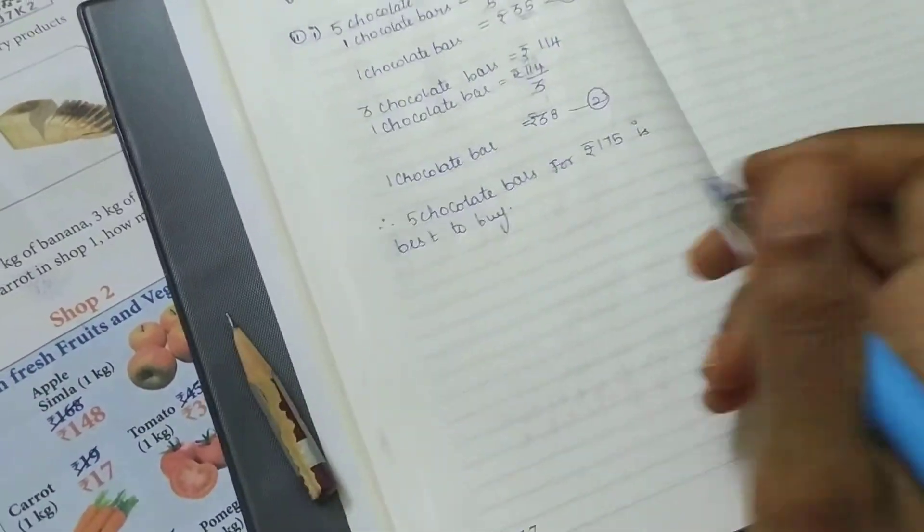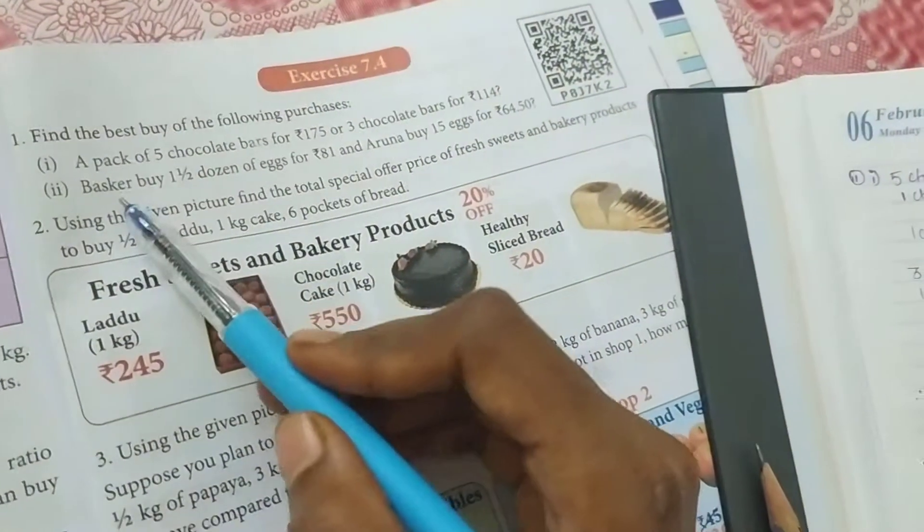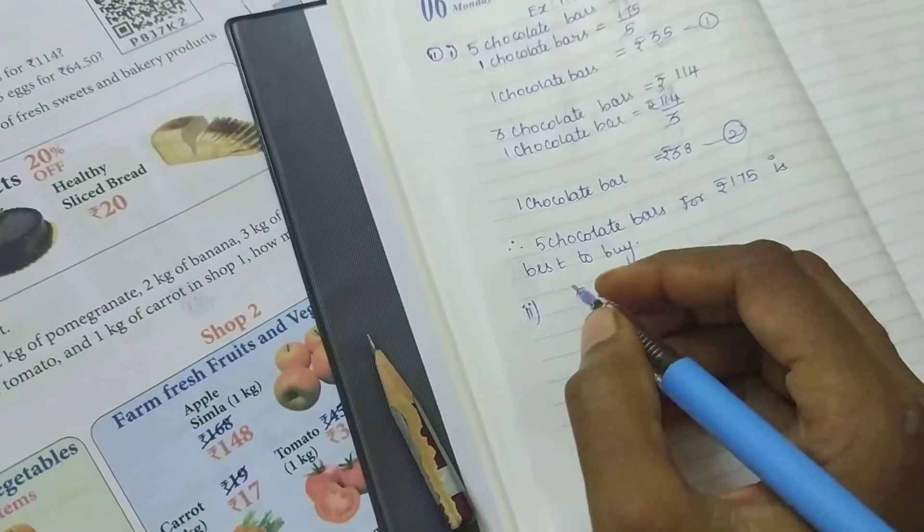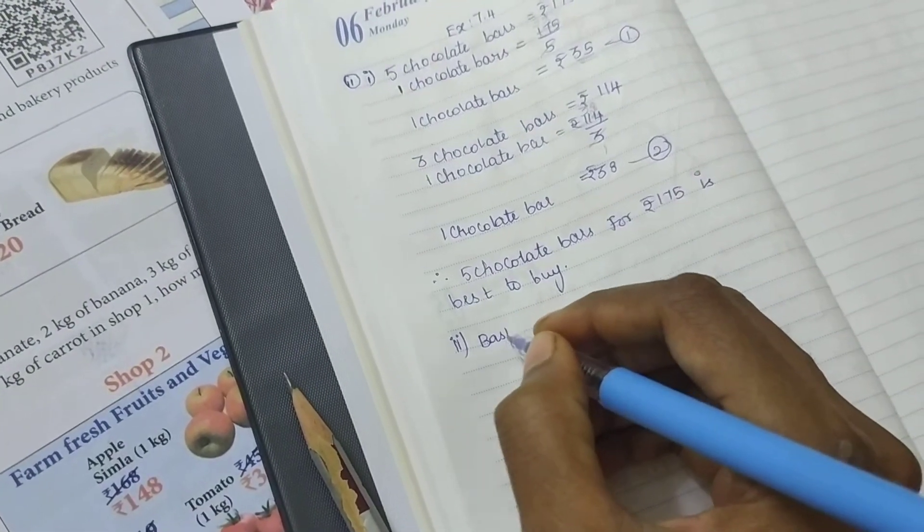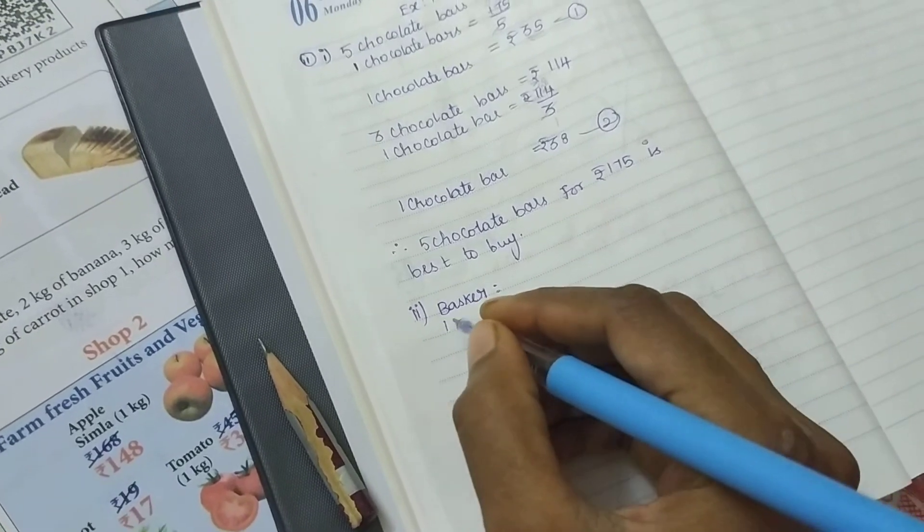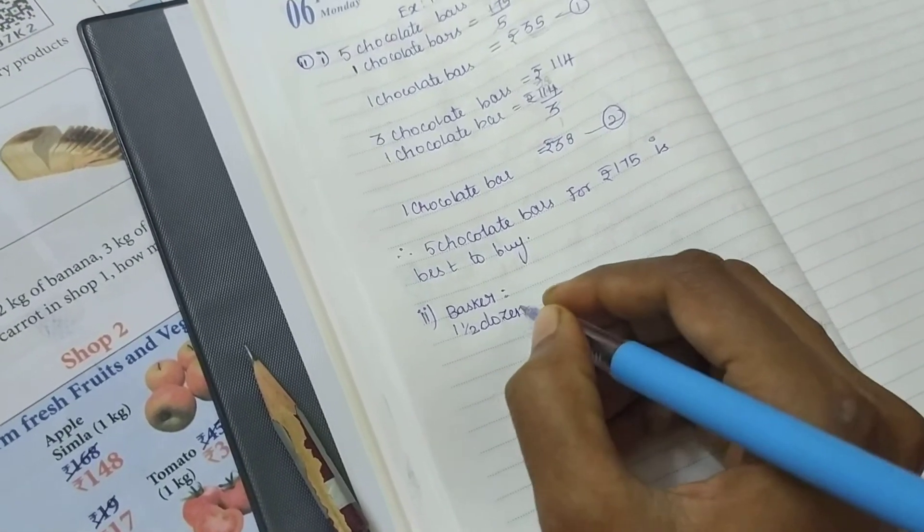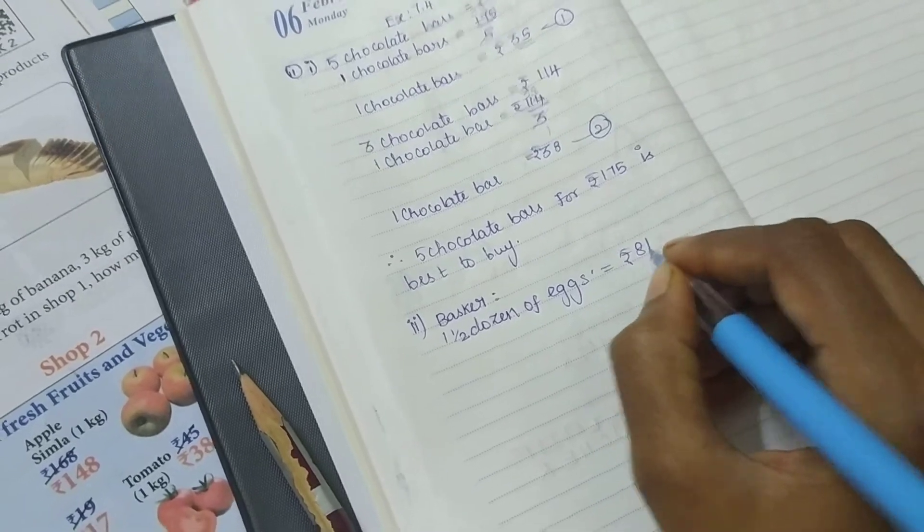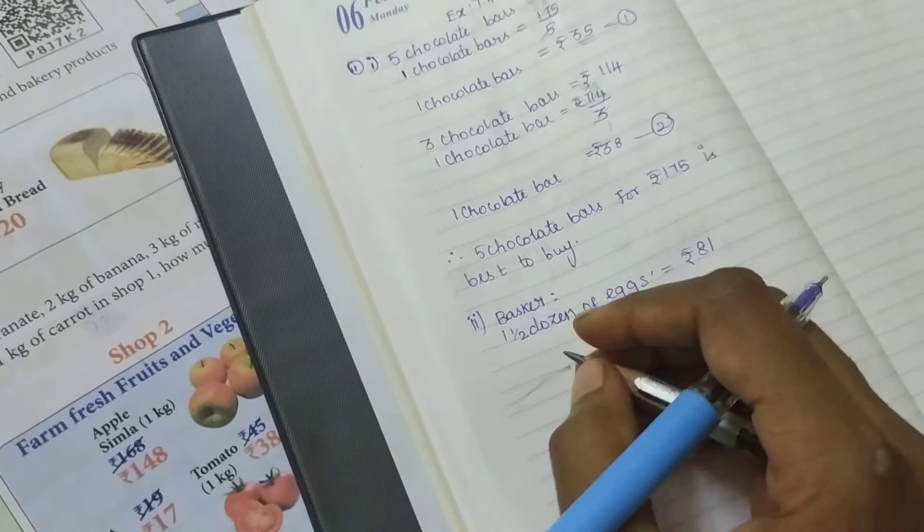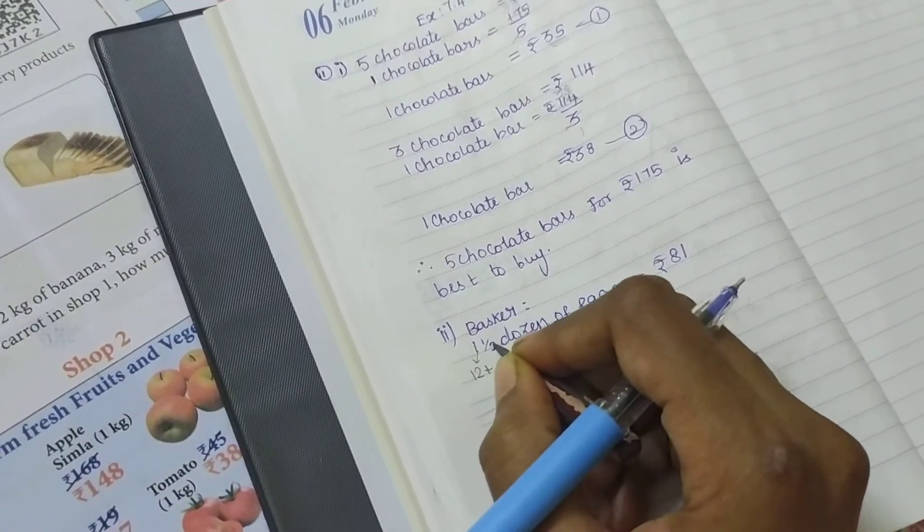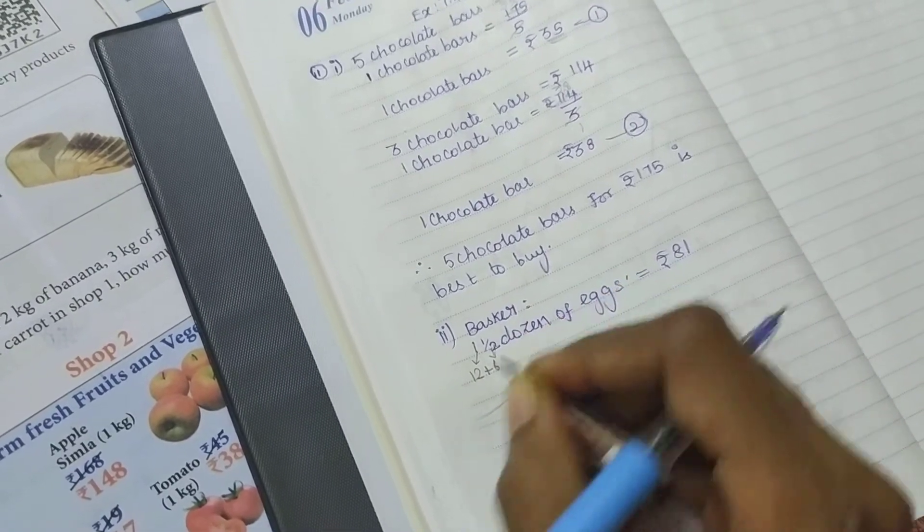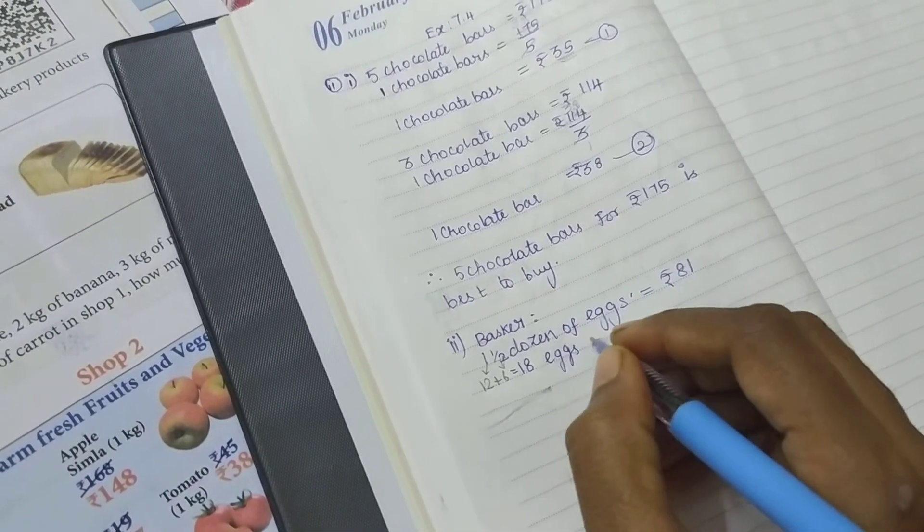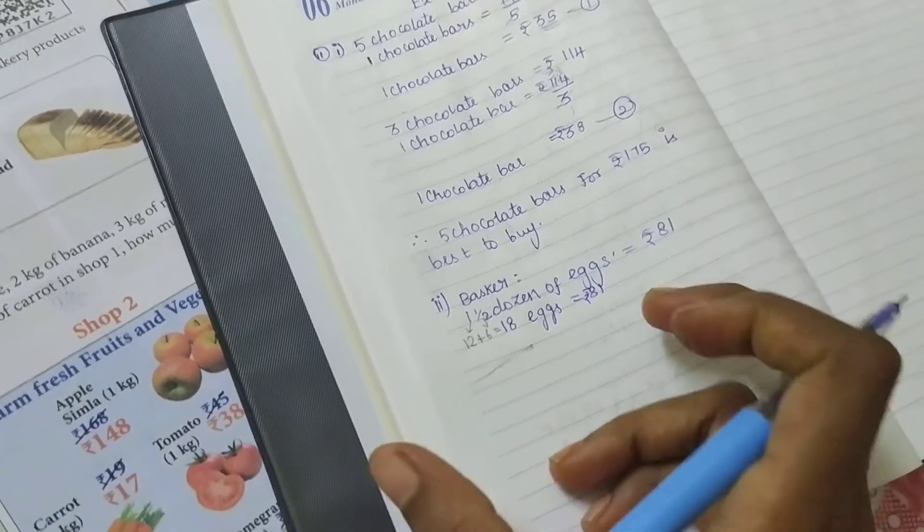Same process for the next problem. Basket buys one and a half dozen eggs for 81 rupees. One dozen is 12 eggs, half means 6 eggs. So totally, 12 plus 6 equals 18 eggs for rupees 81. Now we'll find the price per egg.